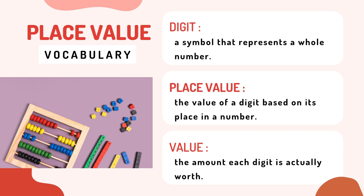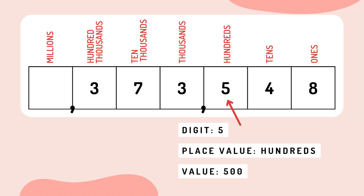Value is the amount each digit is actually worth. Digit — this is the five. Place value: this is hundreds, and the value here is 500.